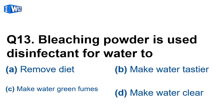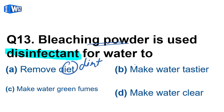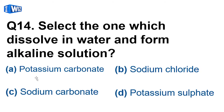A disinfectant will remove dirt, but for dirt removal bleaching powder is not used — other methods apply. To make water germ-free is a different process. Question number 14: select the one which, when dissolved in water, forms an alkaline solution. Alkaline solution means related to basic — the substance that forms an alkaline solution is potassium carbonate.